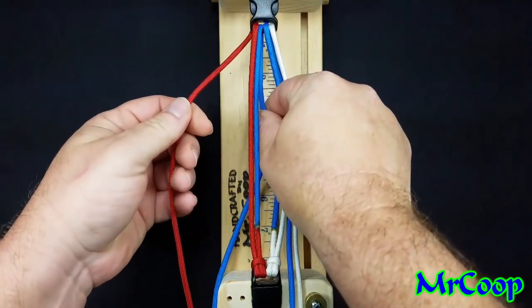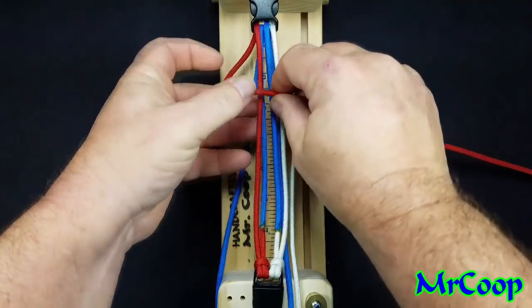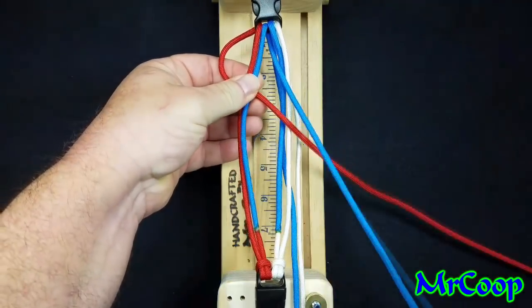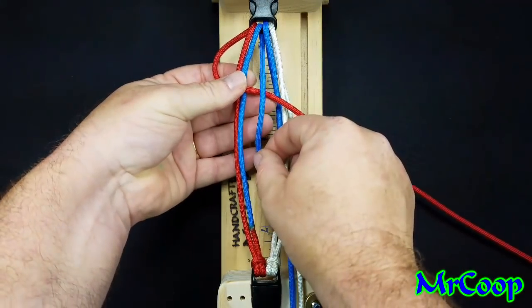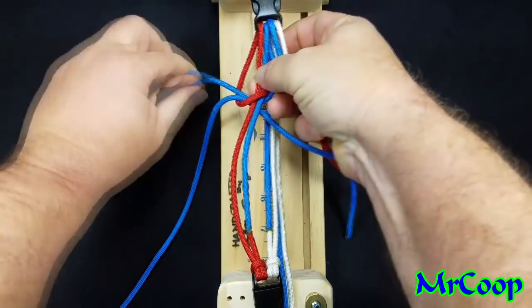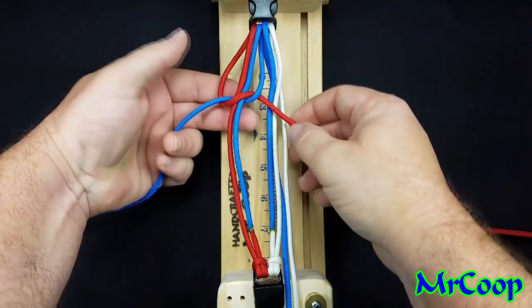Basically, the red is what we're going to start with first. We're going to loop over just like we do an ordinary Solomon bar. Then we're going to bring the blue over the red, under the core, out the hole on the other side, just like we do on every Solomon bar Cobra knot.